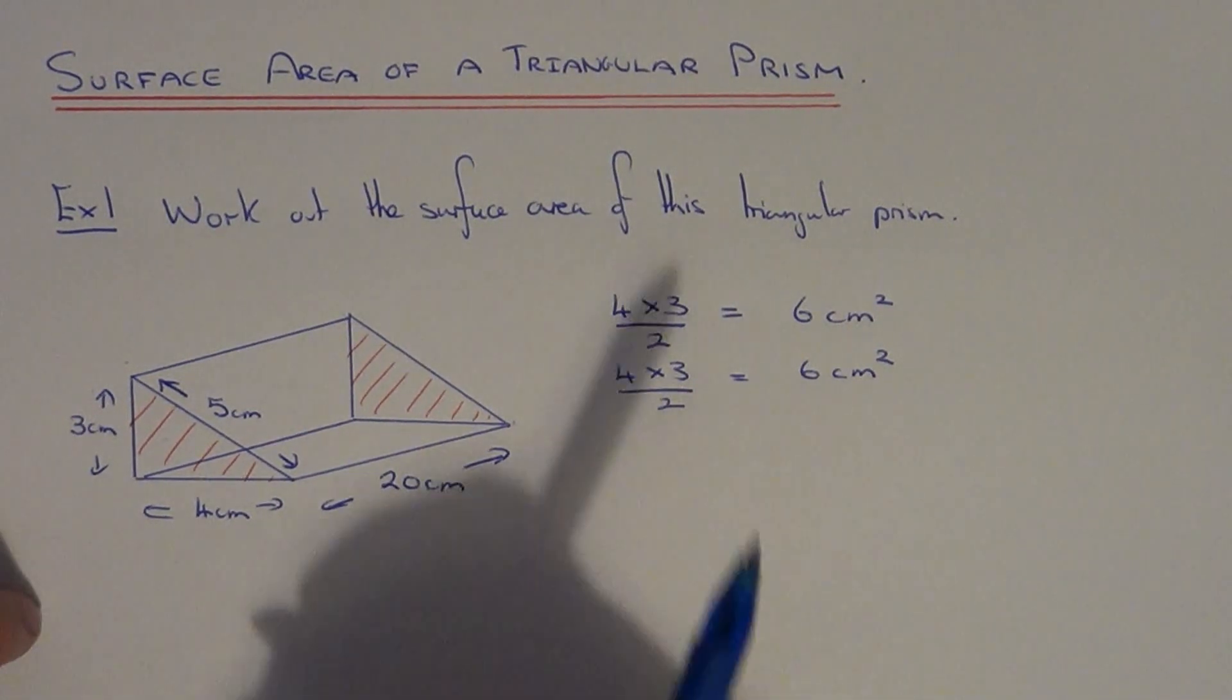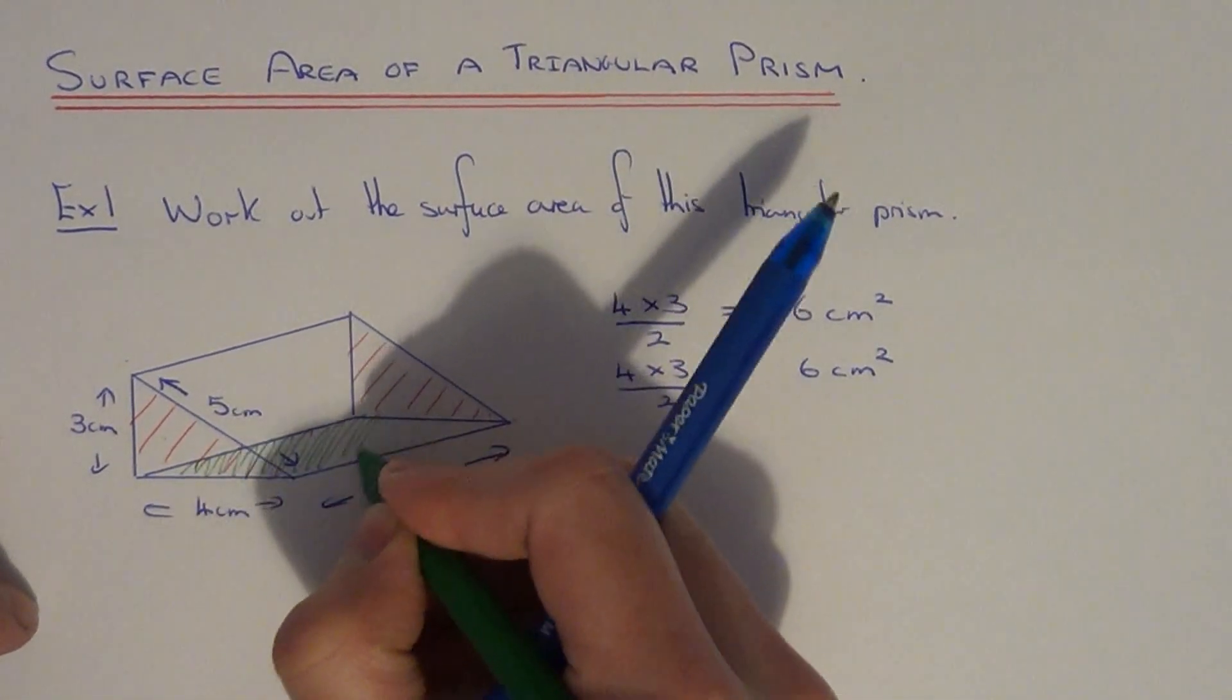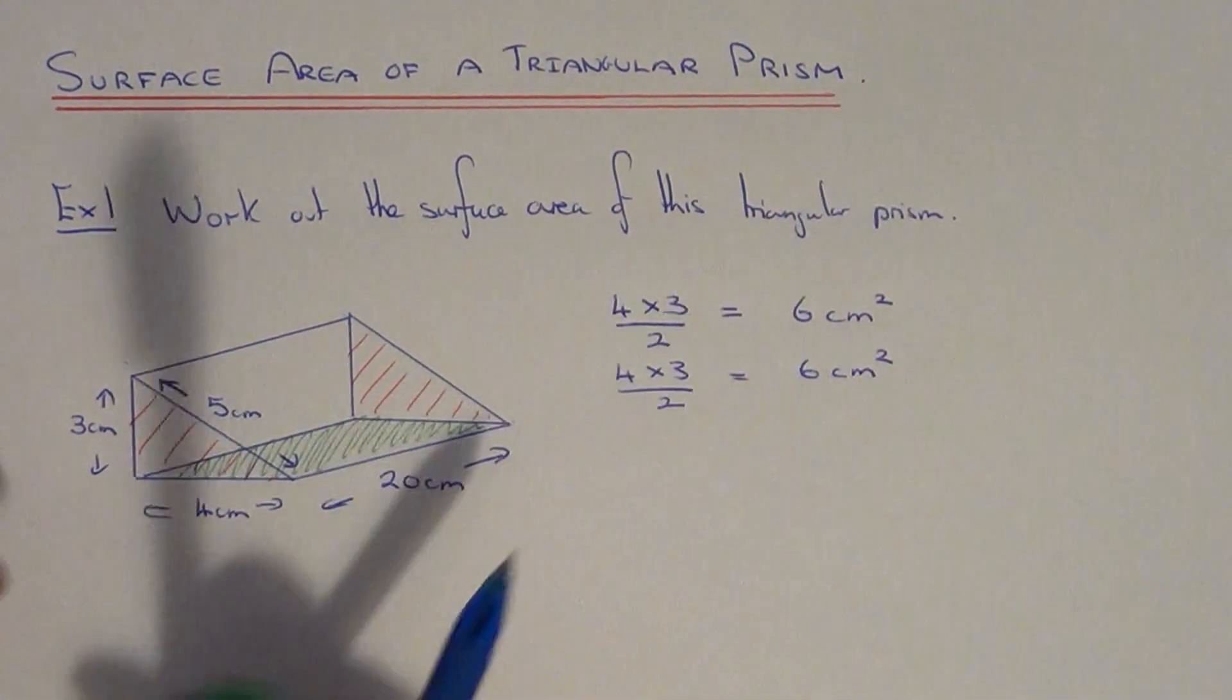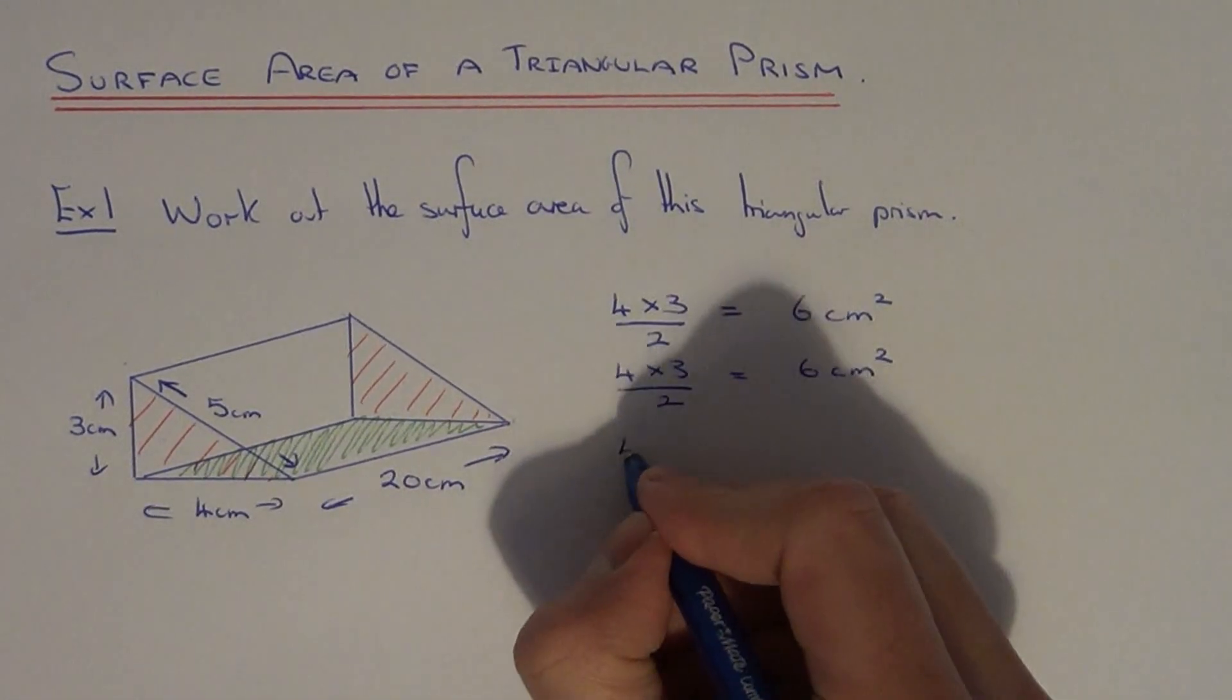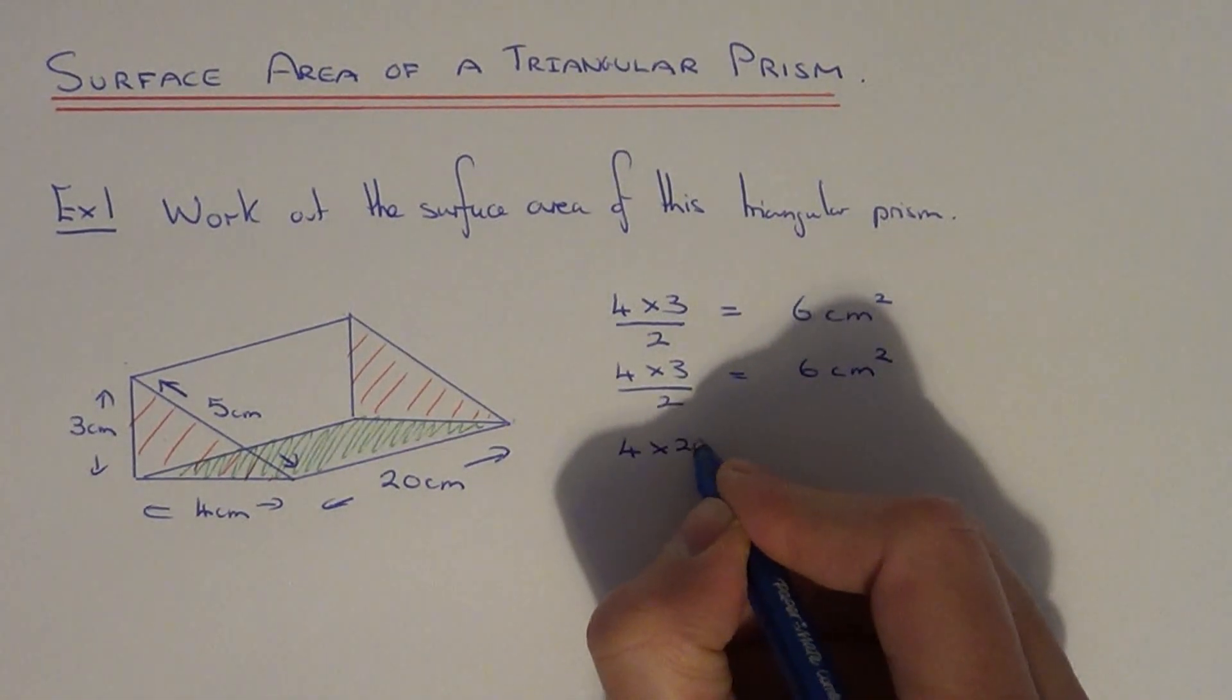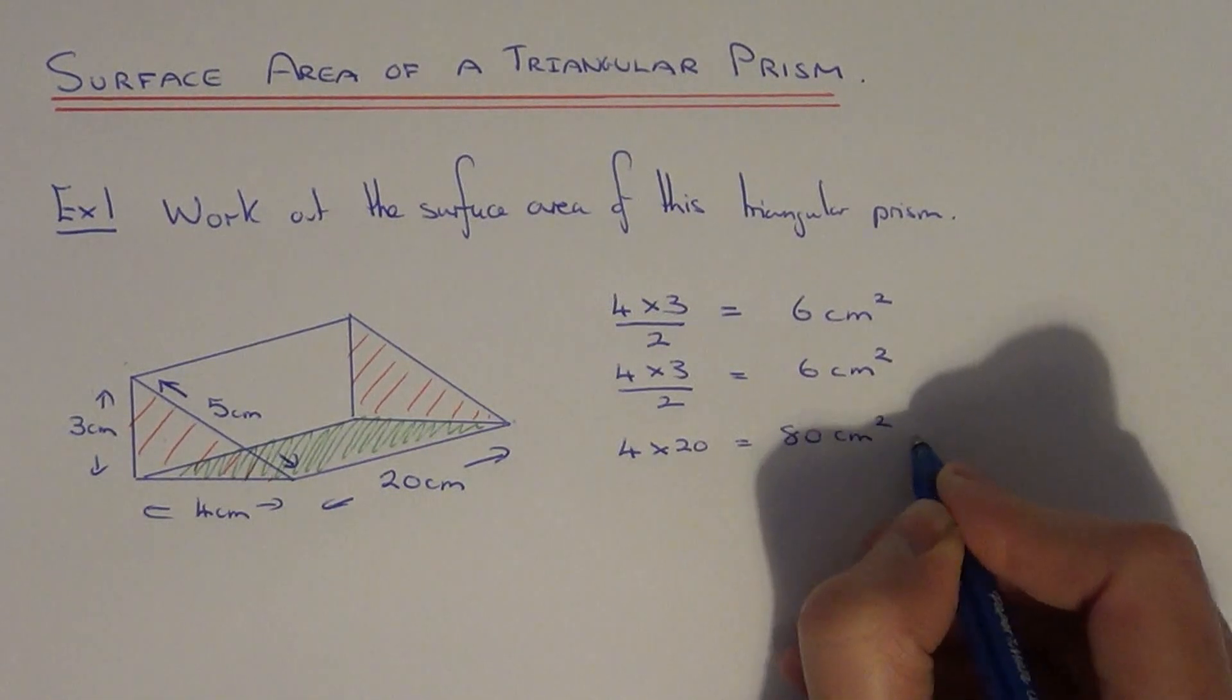Let's now look at the rectangular faces. Let's do the one which is at the bottom of the prism. So to do this one we just need to multiply the two sides together. So we do 4 times 20. So that gives us 80 cm squared.